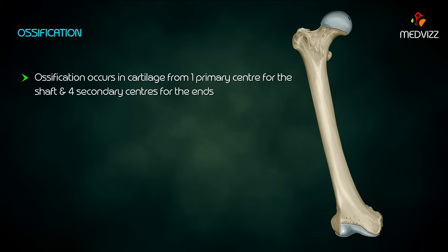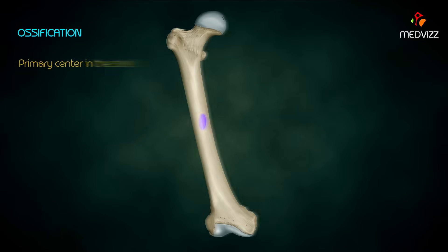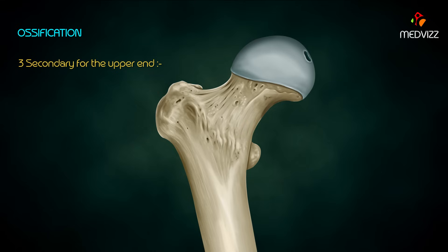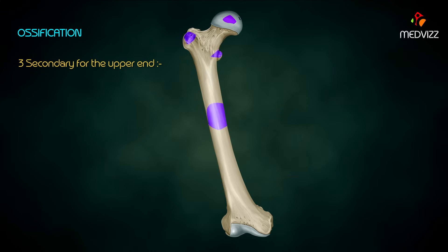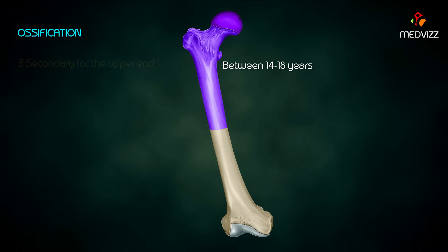Ossification occurs in cartilage from one primary center for the shaft and four secondary centers for the other ends. The primary center in the shaft appears in the seventh week of intrauterine life. Three secondary centers for the upper end: one for the head appears in the first year, one for the greater trochanter between three to five years, and one for the lesser trochanter between 12 to 15 years. All unite with the shaft independently between 14 to 18 years.